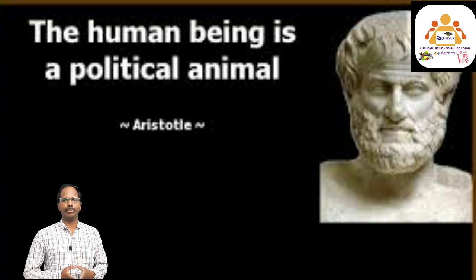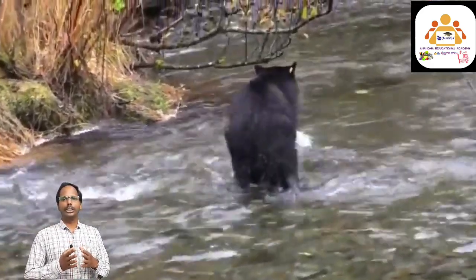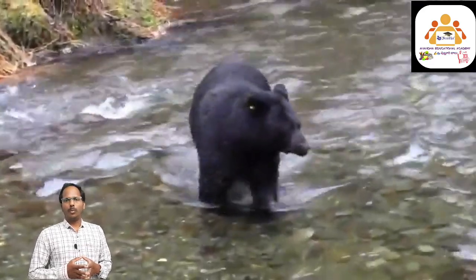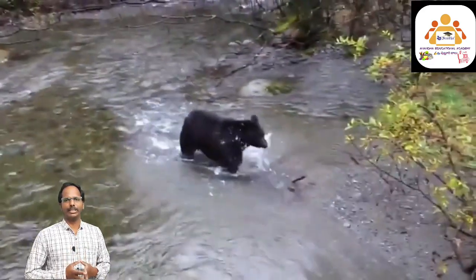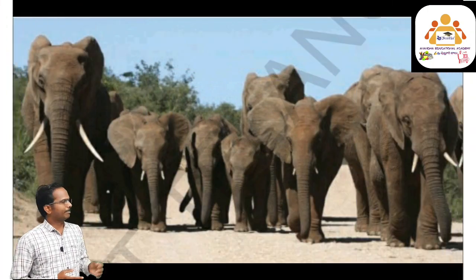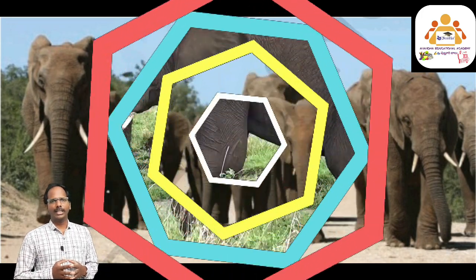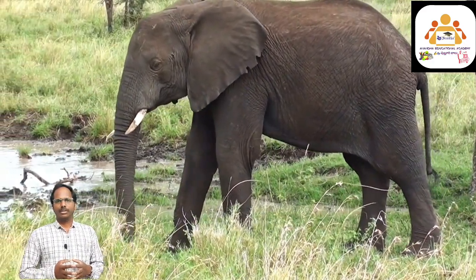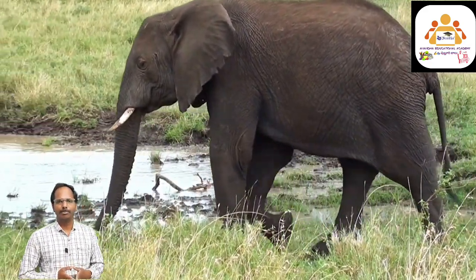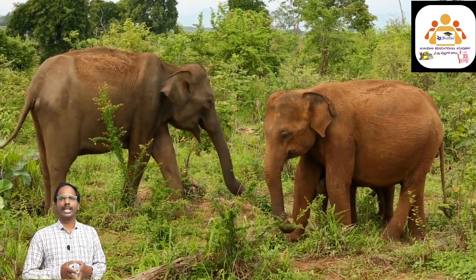What about the animals, children? Think once — how do they live? What do they do for their living? Do you know what is the lifestyle of animals? Look at the picture on the screen. Elephants in the forest live in herds. There may be 10 or 12 elephants in each herd along with their babies. A large group of animals that live together is known as a herd.